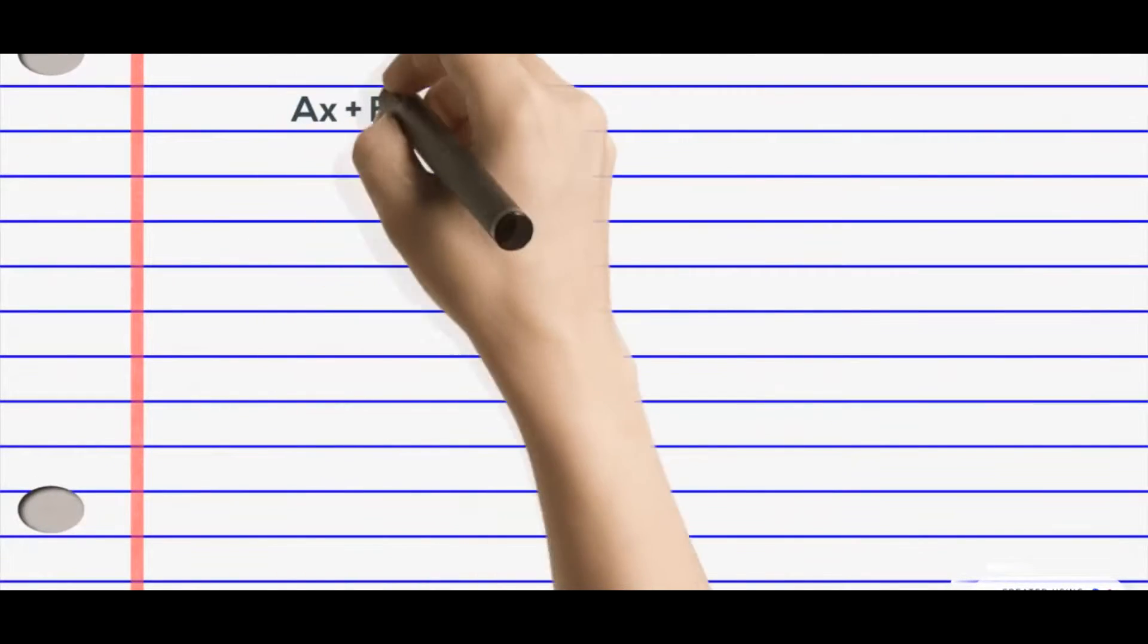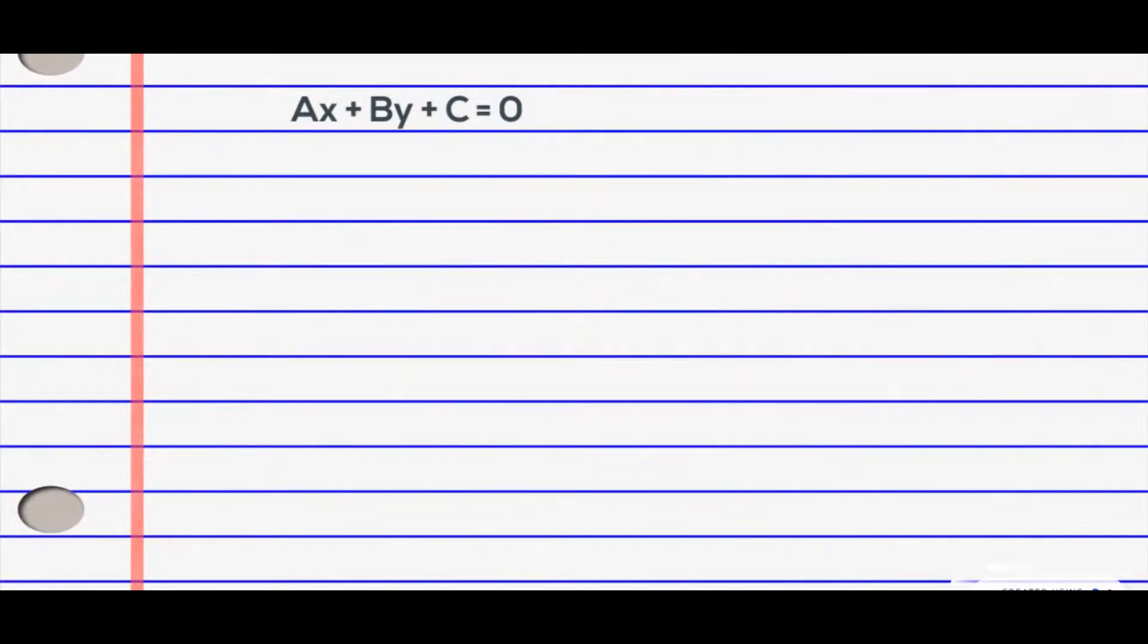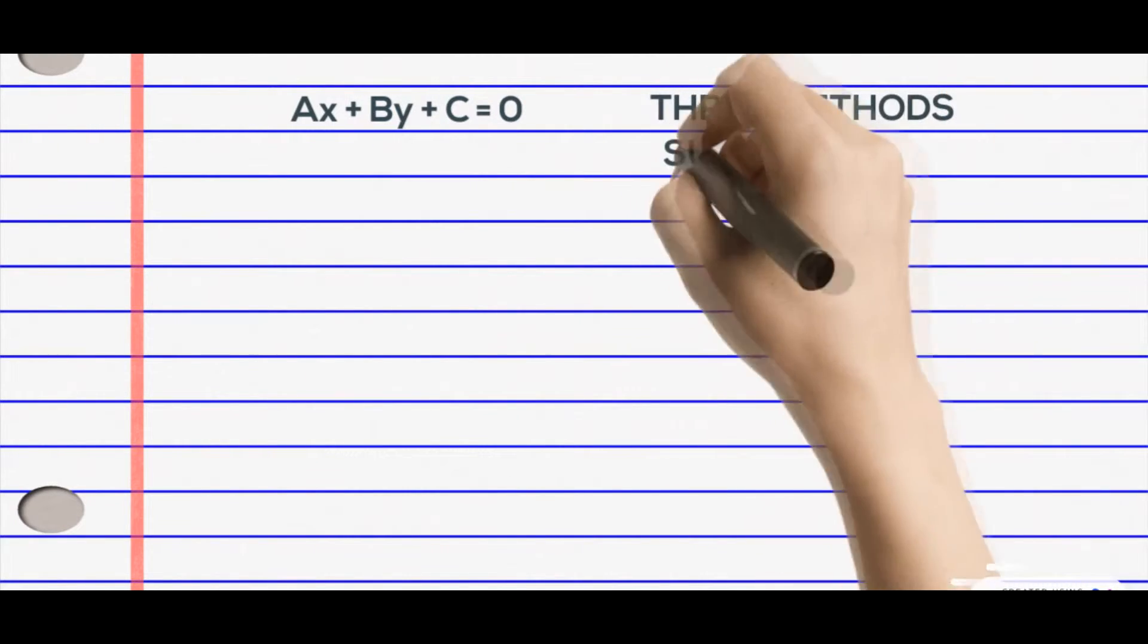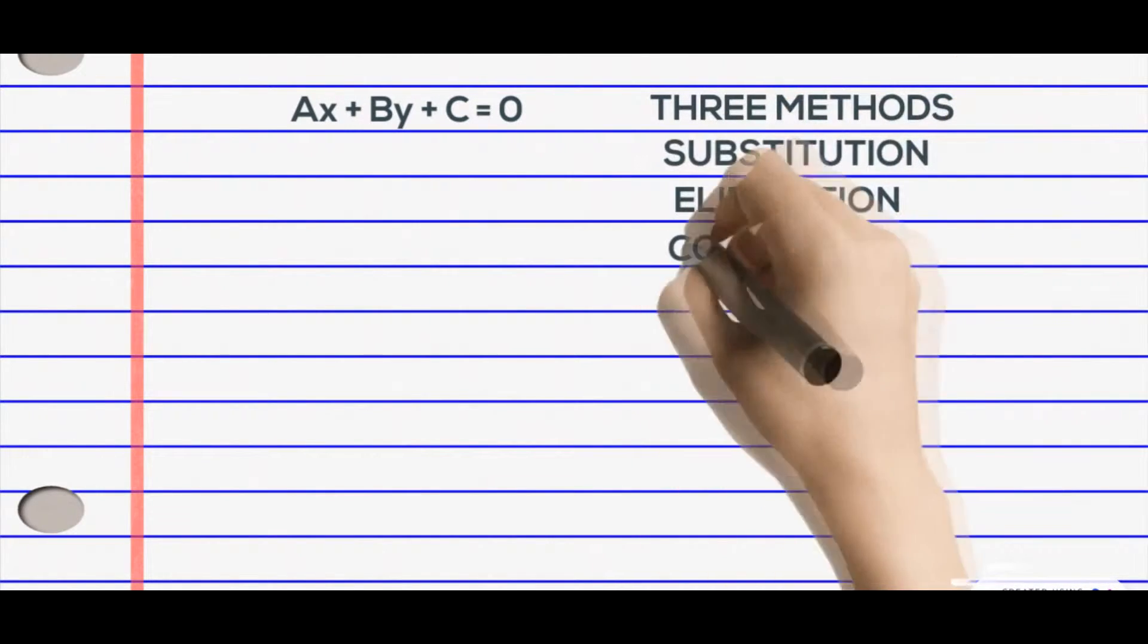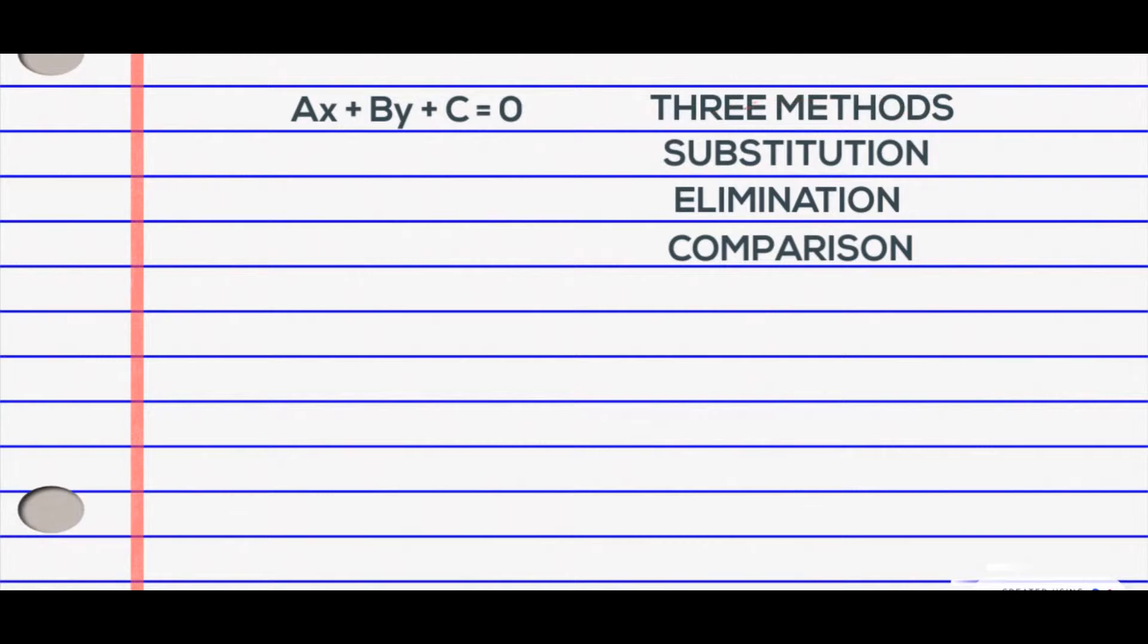An equation that cannot be written in the form of AX plus BY plus C equals zero is considered as nonlinear. There are three methods in solving systems of nonlinear equations, but for now, I will use the substitution method.